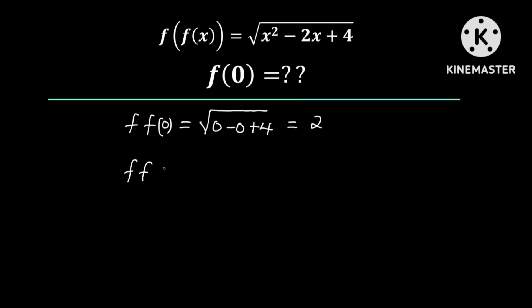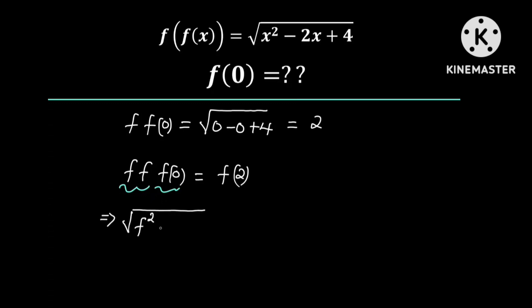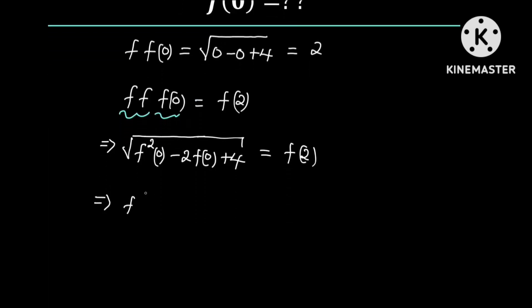If we take f on both sides, we obtain f of f of f of 0, which is equal to f of 2. From the left hand side, we need to input f of 0 into the function f of x. So this implies that the square root of f squared of 0 minus 2 times f of 0 plus 4 is equal to f of 2. If we square both sides, we obtain f squared of 0 minus 2 times f of 0 plus 4 is equal to f squared of 2. Let's call this equation 1.